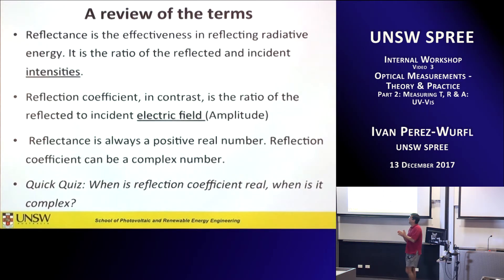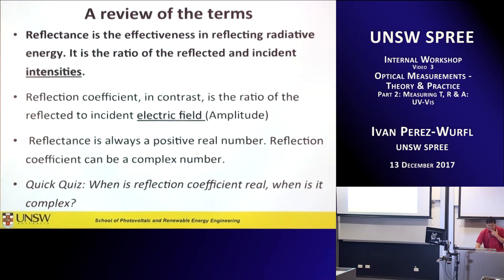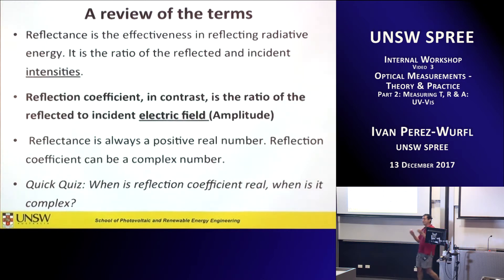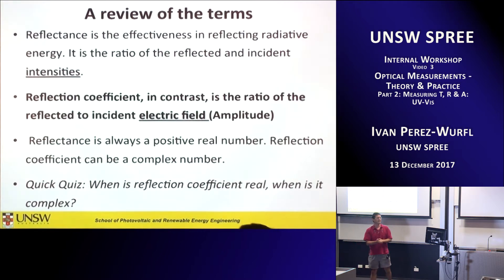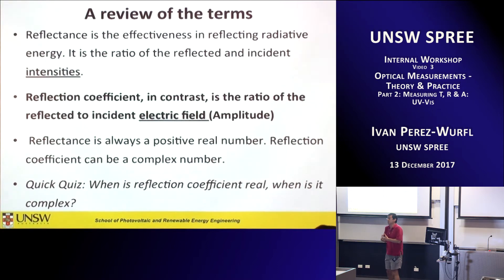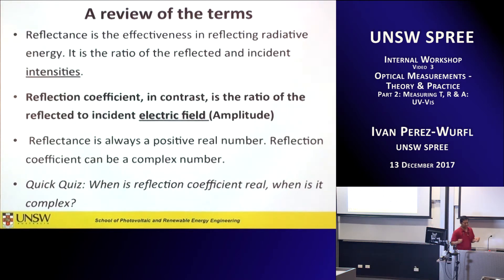Reflectance is measuring energy — you are measuring intensities. When somebody talks about a reflection coefficient, they are referring to electric field amplitudes, and we unfortunately cannot easily measure them, mainly because the electric field is changing at the frequency of light, on the order of 10^14 Hz. So we average that into heat and figure out the actual intensity. We never really measure the reflection coefficient.